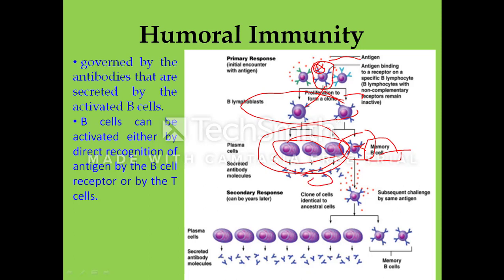The secreted antibodies clear the infection and antigenic molecules present in the host body, while memory cells retain their memory for the same pathogen for secondary infection. This is called the primary response. When the same organism is infected again by the same antigen, memory cells with membrane-bound antibody undergo proliferation very quickly, producing plasma B cells and memory B cells. These plasma B cells produce secretory antibodies and clear the infection.